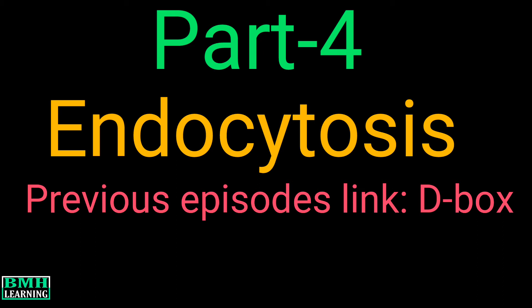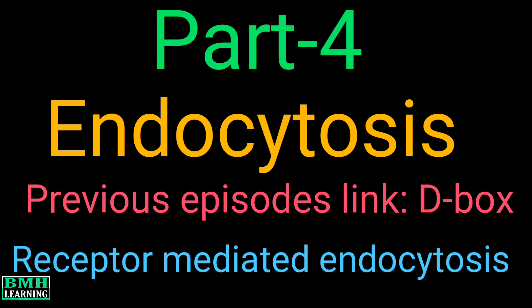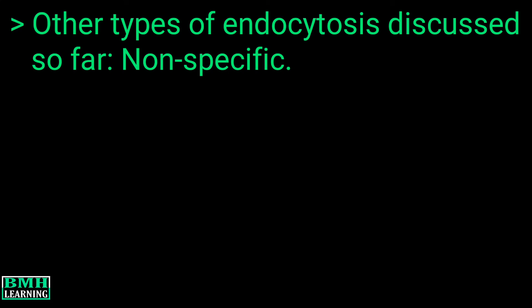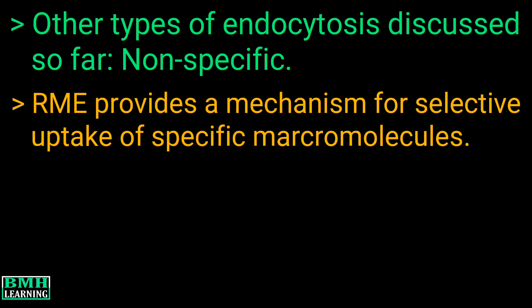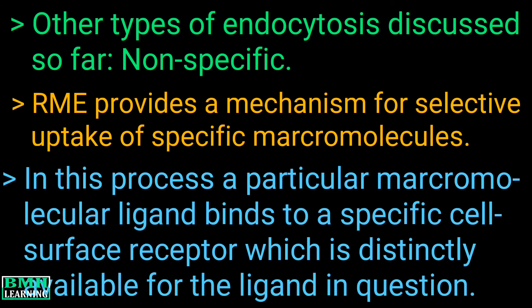This tutorial will deal with a very important type of endocytosis known as receptor-mediated endocytosis. The other types of endocytosis we have discussed so far were non-specific. But receptor-mediated endocytosis provides a mechanism for selective uptake of specific macromolecules. In this process, a particular macromolecular ligand binds to a specific cell surface receptor which is distinctly available for the ligand in question.